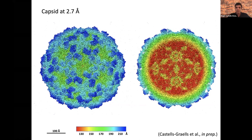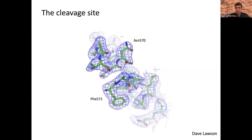We can see features like beta sheets and alpha helices. We can also go to the cleavage site, where you can see the break in the density after the autoproteolytic cleavage that I was mentioning.